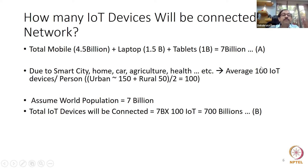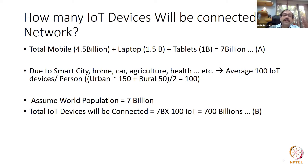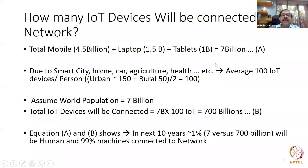If 100 IoT devices per person, and the world population is 7 billion, then total IoT devices connected to the network will be 7 billion × 100 = 700 billion. We currently have 7 billion human devices connected, and this is 700 billion — 100 times more — within the next 10 years. Equation A is 7 billion; Equation B is 700 billion.